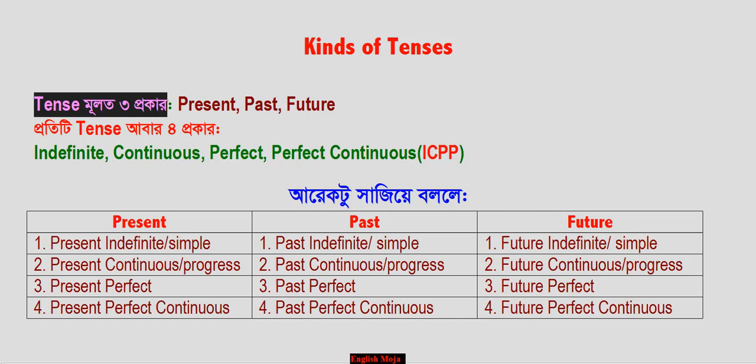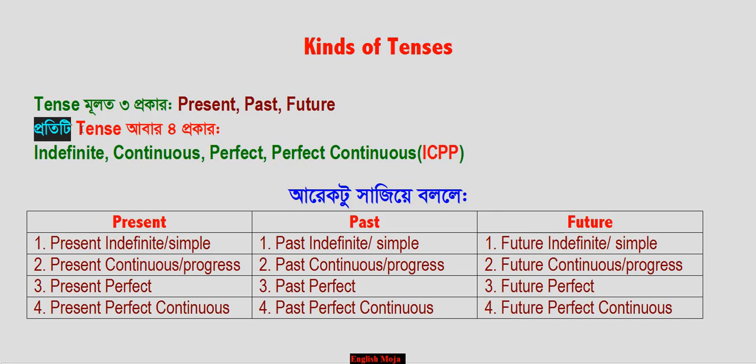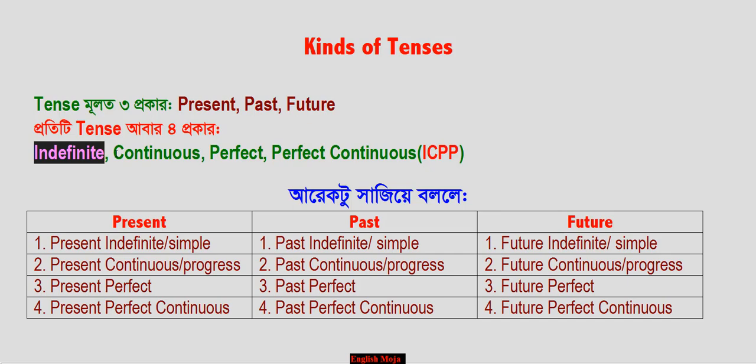One is Present, one is Past, and one is Future. These are the three main tenses. Number 1 is Simple or Indefinite. Number 2 is Continuous. Number 3 is Perfect. Number 4 is Perfect Continuous.